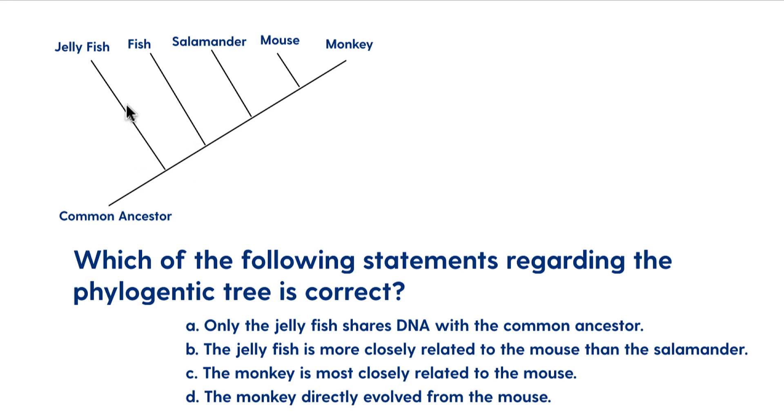Sometimes you know how they're related and other times it's like this where there's nothing really to identify what is the difference between these different organisms, but we can still determine a fair amount of information from this. And so if you look you've got a jellyfish, fish, salamander, mouse, and monkey. And here you have this line that is continuing to go from the common ancestor and it looks like it goes all the way to the monkey, but it is actually representing the relationship between these organisms, how closely related they are.